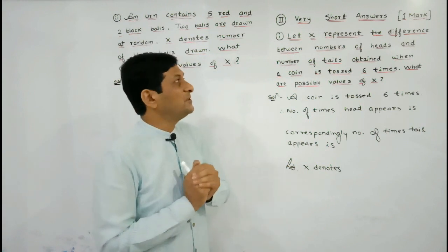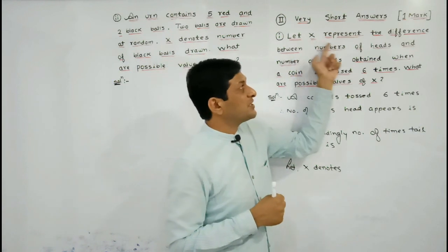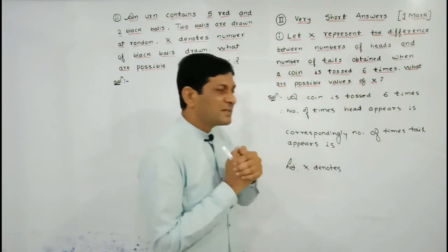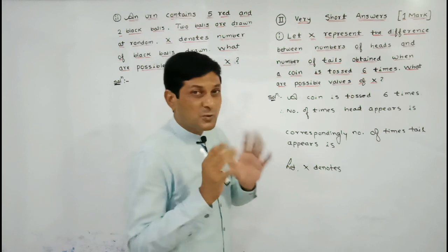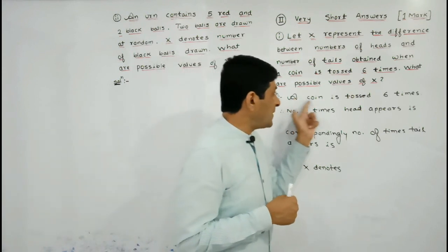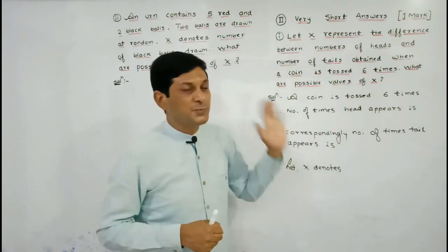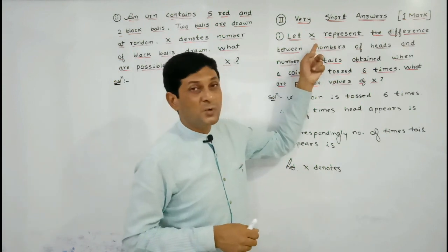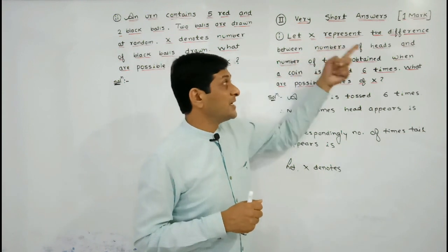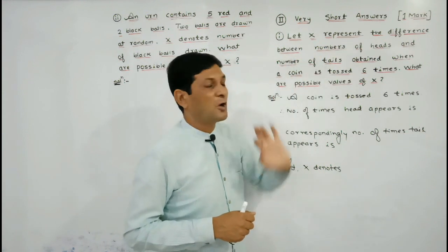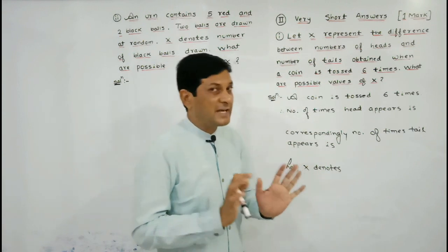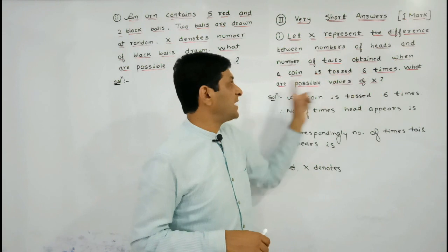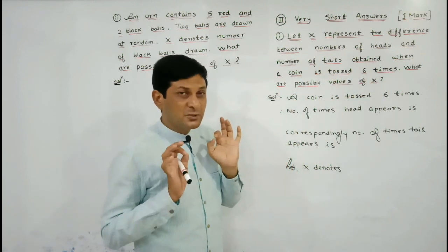In the first example, X represents the difference between the number of heads and number of tails obtained when a coin is tossed six times. The coin is tossed six times — this is our random experiment. X is our random variable representing that difference. We need to first find the number of heads, then the number of tails, and then find the difference to get the possible values of X.